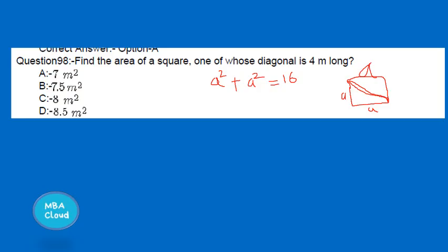From 2a² = 16, the area of the square is a² = 8. So 8 is the right answer. This is the equation to use.